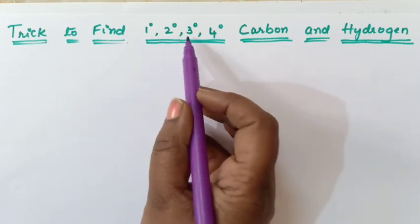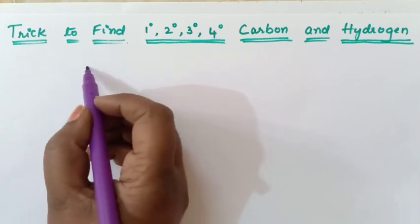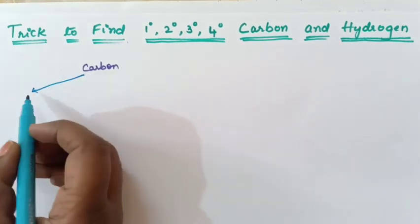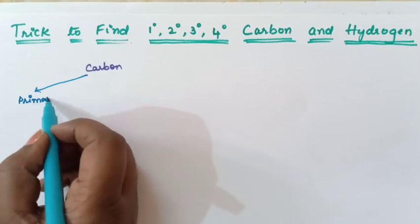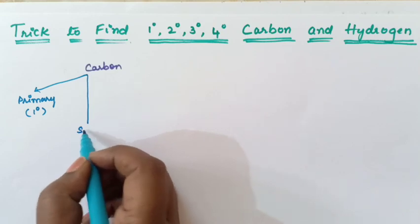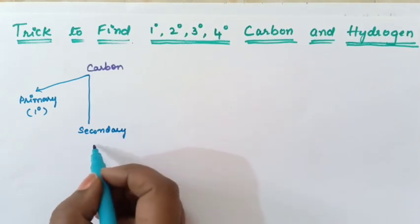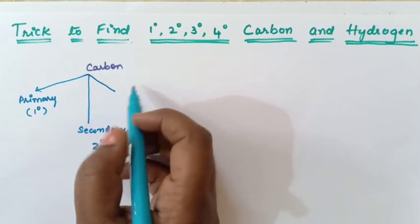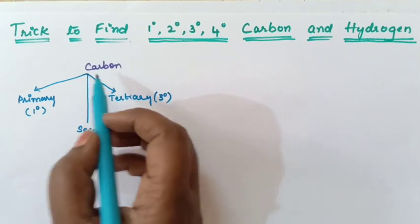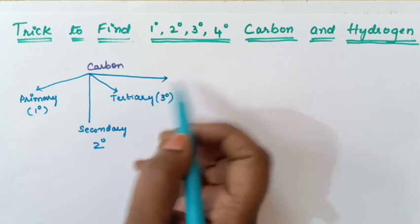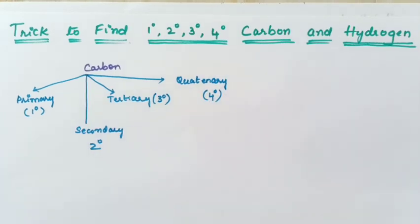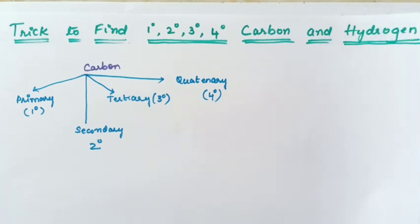First, let us see primary, secondary, tertiary, and quaternary carbon. Carbon can be classified into four types. Primary is usually represented as one degree. Secondary is represented like this. Tertiary is represented like this. And then fourth, quaternary, represented this way. So now let us see what primary, secondary, tertiary and quaternary carbons are.